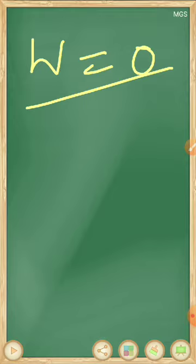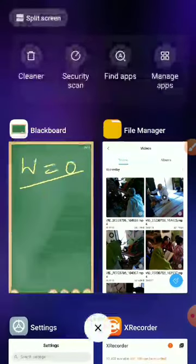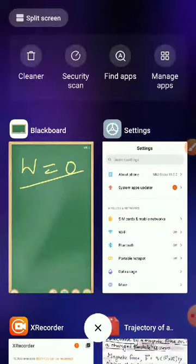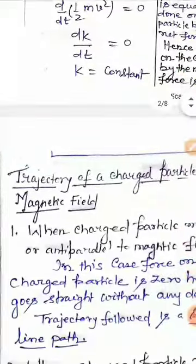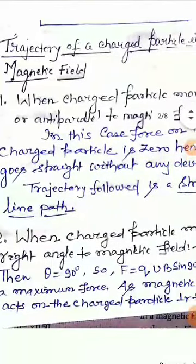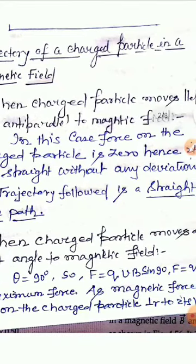Now let us discuss the trajectory of a charged particle in a magnetic field. First case: when the charged particle moves parallel or anti-parallel to the magnetic field. In this case the magnetic force acting on it is 0, so it will go straight without any deviation, and the trajectory is a straight line path.